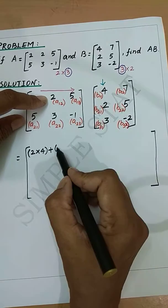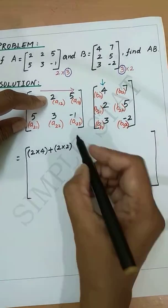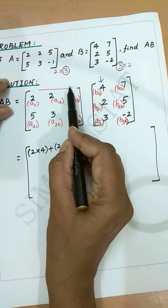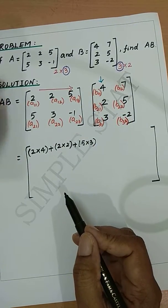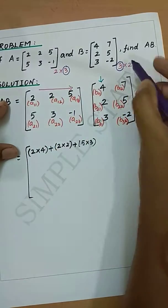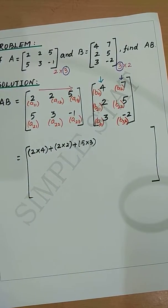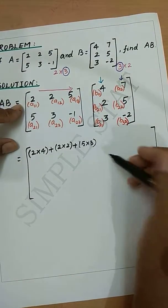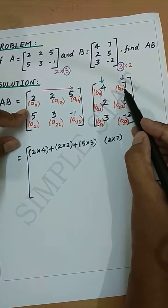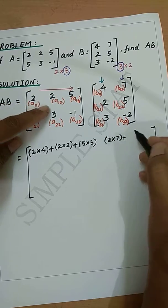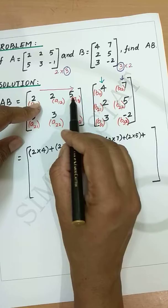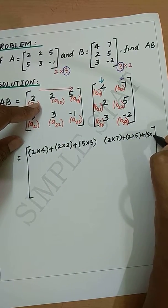...plus 2×2, plus 5×3. So we have taken the first row multiplied with all the elements in the first column. Now proceed with first row and second column: we get 2×7 (A11 × B12), plus the second element 2×5, plus the third element 5×(-2).